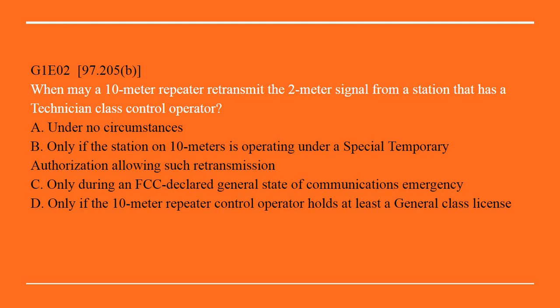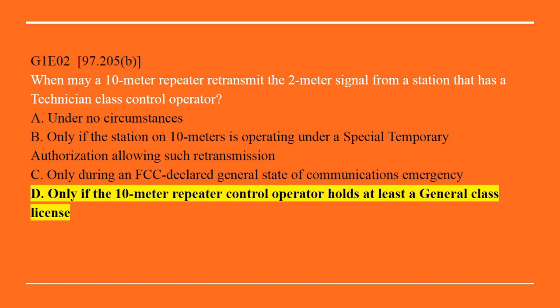G1E02: When may a 10-meter repeater retransmit the 2-meter signal from a station that has a Technician class operator? A. Under no circumstances. B. Only if the station on 10 meters is operating under special temporary authorization allowing such retransmission. Or C. During an FCC-declared general state of communications emergency. D. Only if the 10-meter repeater control operator holds at least a General class license. Correct answer is D: Only if the 10-meter repeater control operator holds at least a General class license.